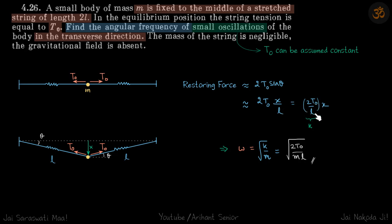This is now the equation of SHM, and the frequency will be √(k/m). This is the k which gives our answer, so ω = √(2T₀/ml).